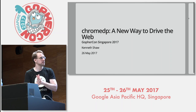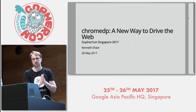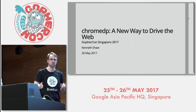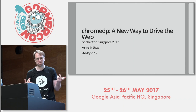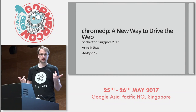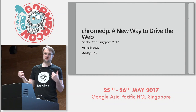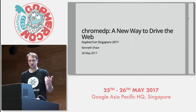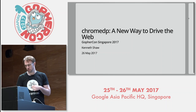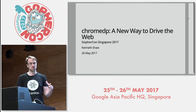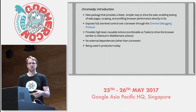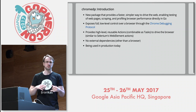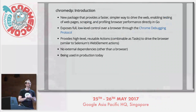What I've come here to talk to you about today is ChromeDP, which is a new way to drive the web. This is a piece of technology that we built at Broncos to handle scraping on an industrial scale. But the applications you can use it for go way beyond scraping — you can use it for profiling web pages and a bunch of other things.